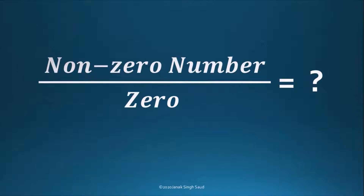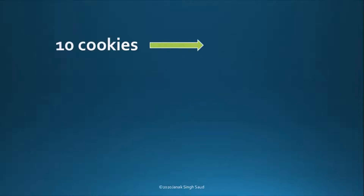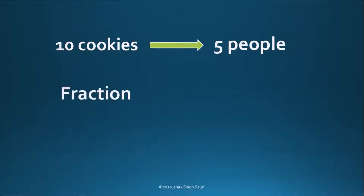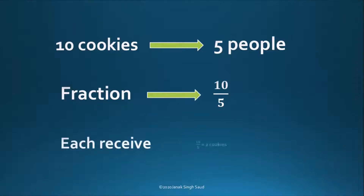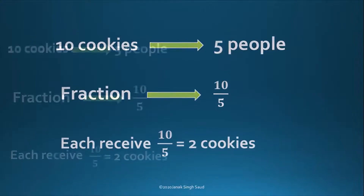To understand this more clearly, consider having 10 cookies and these cookies are to be distributed equally to 5 people at a table. If we write this in fraction form, it is 10 by 5, which means that each person would receive 2 cookies.